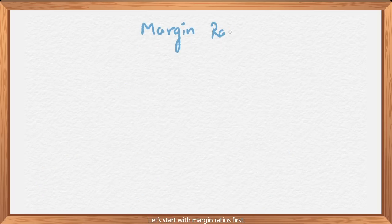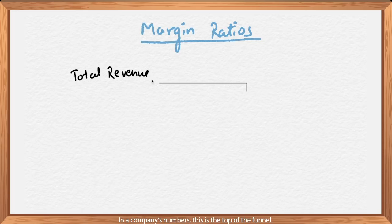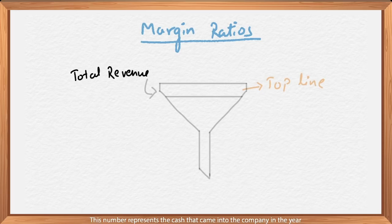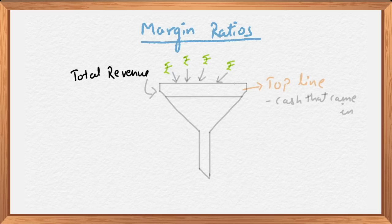Let's start with Margin Ratios first. To understand this, let's begin with something called the top line in an income statement — the total revenue. In a company's numbers, this is the top of the funnel. This number represents the cash that came into the company in the year from its business activities. It's also called the gross income or revenue from sales — many names, but one concept: money that came in.